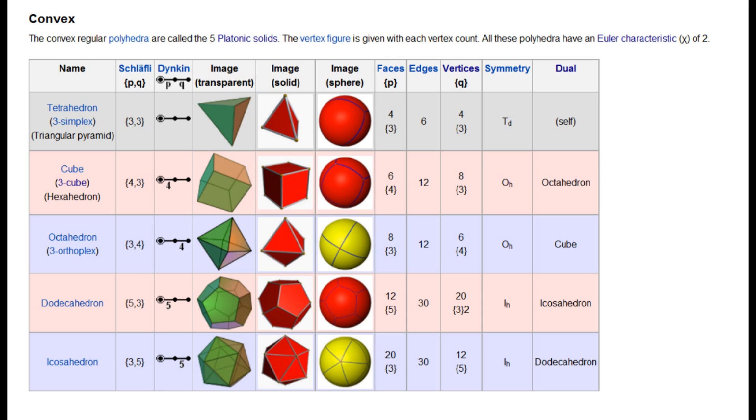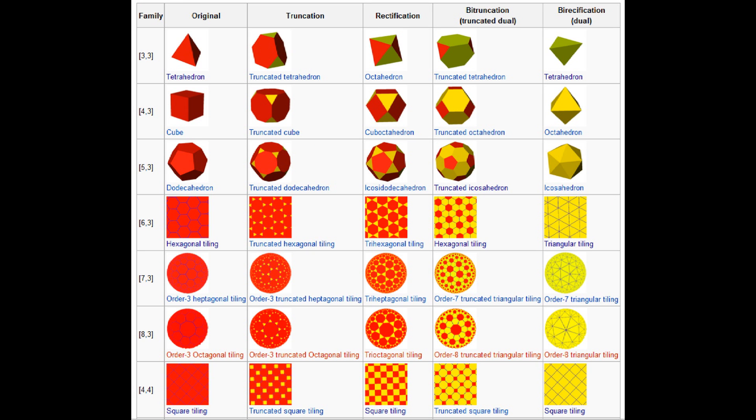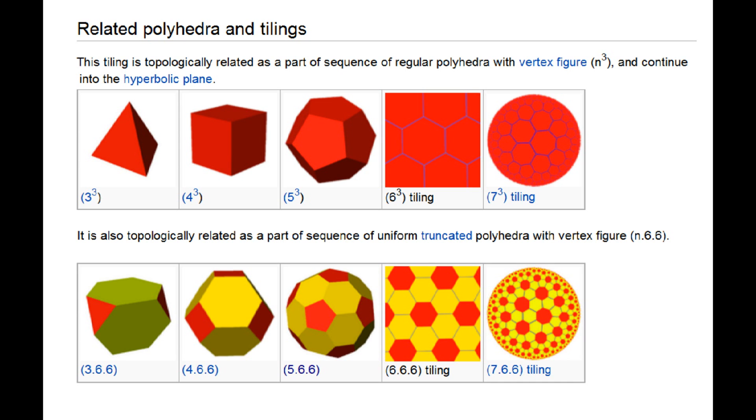The tetrahedron is one of the five platonic solids, which are the only five convex regular polyhedra. Regular meaning that all the faces are congruent regular polygons, which are assembled in the same way around each vertex. Basically, every face has exactly the same shape, and number of sides, and every point has the same number of edges connecting to it.